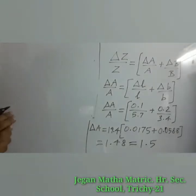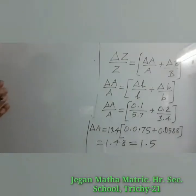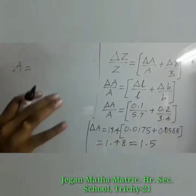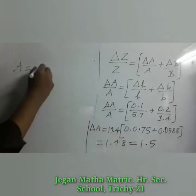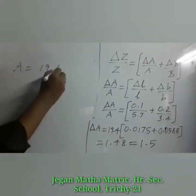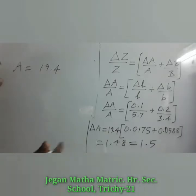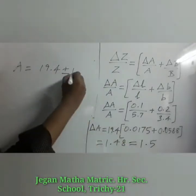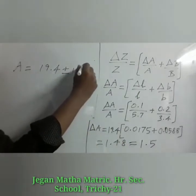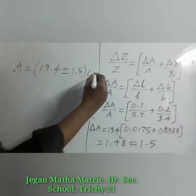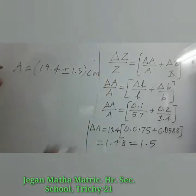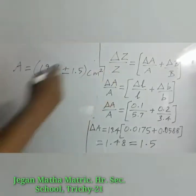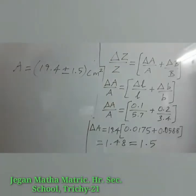Finally, we can write the area with the error limit: Area = 19.4 ± 1.5 cm². Since length and breadth are given in centimetres, the area is expressed in centimetres squared.